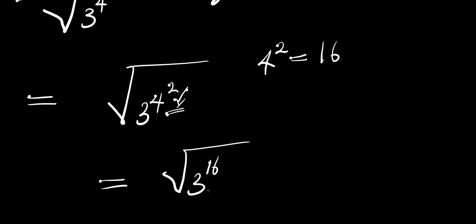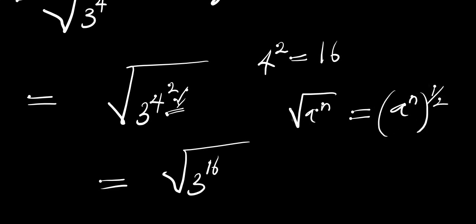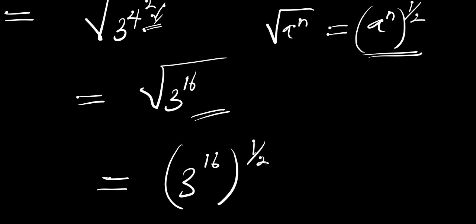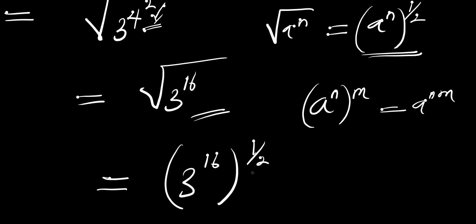So what is 3^16? If you have the square root of a^n, this equals a^(n × 1/2), because of the square root. Applying this identity here, we have 3^16 raised to the power of 1/2. Using the identity a^(n×m) = a^(n times m), we multiply 16 times 1/2, which gives 3^8, because 16 divided by 2 is 8.